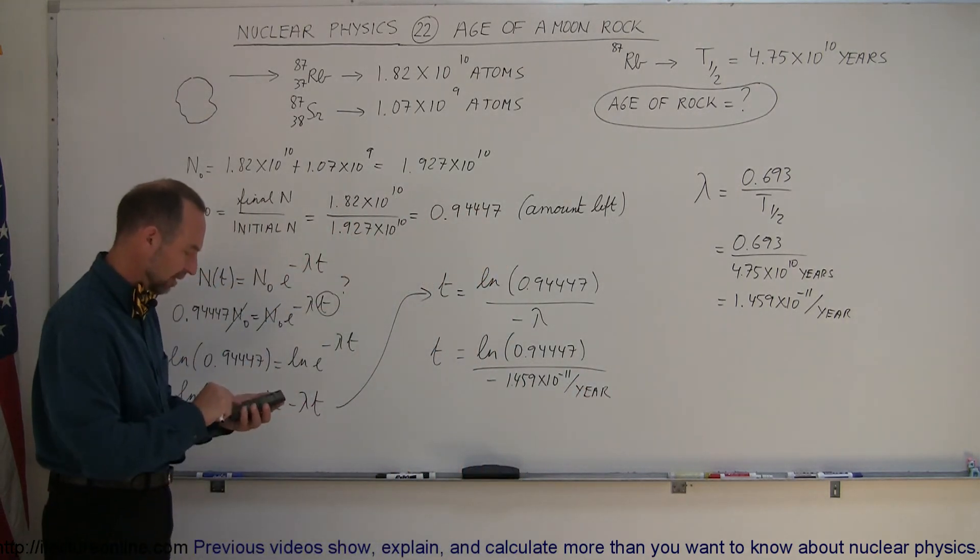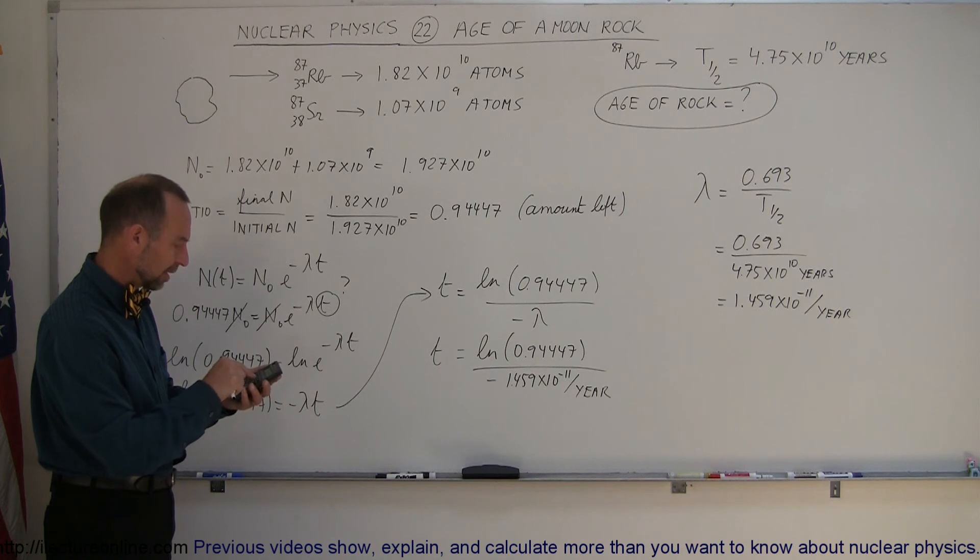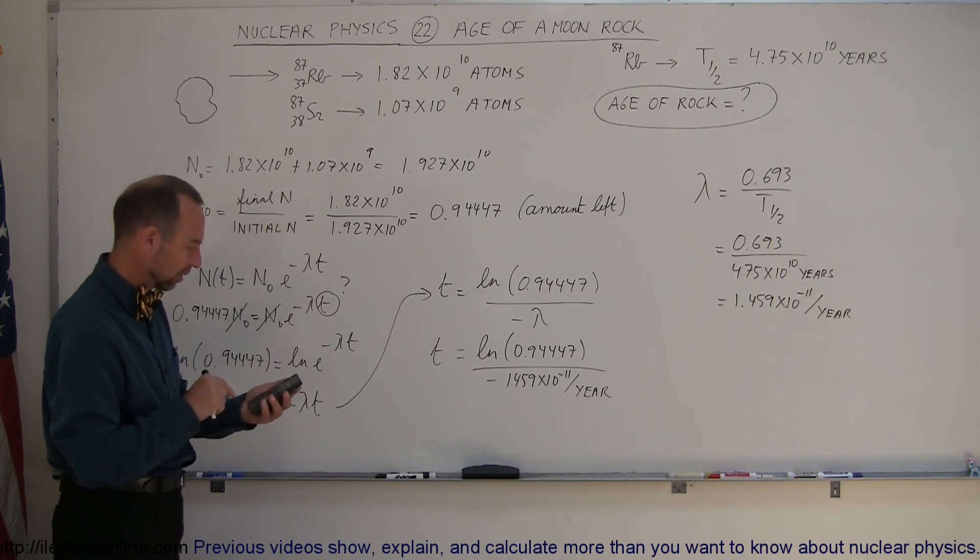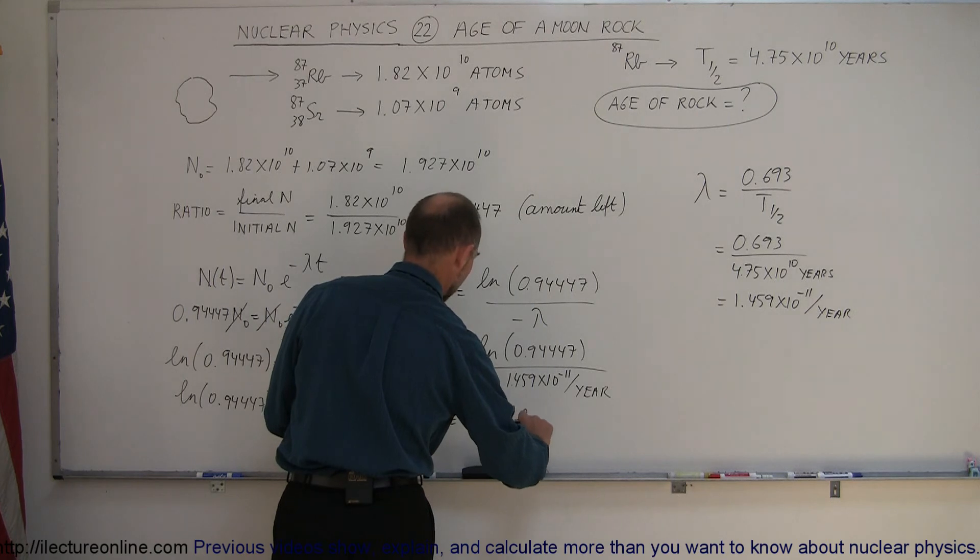Okay, so take the inverse of that, and then multiply that times 0.94447, take the natural log, equals, and the minus, and time is equal to 3.916 billion years.